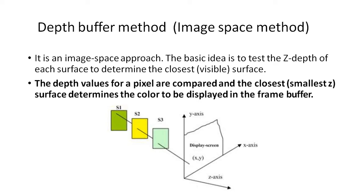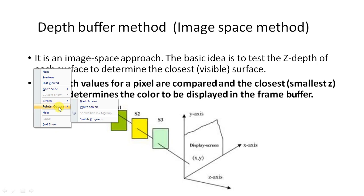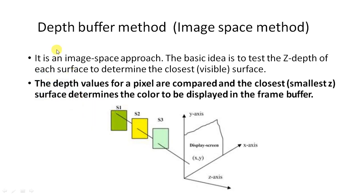The depth buffer method is also called the Z-buffer method, where Z stands for depth. It is a technique of the image space method. As discussed in the previous session, the image space method is applied on a screen coordinate system, meaning we can identify back-face surfaces pixel by pixel.